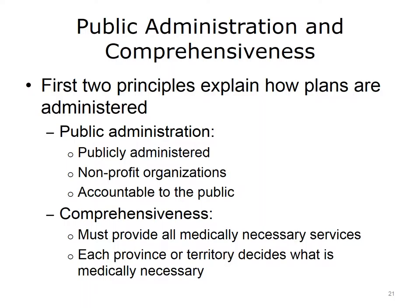The first two principles explain how a health plan must be administered by the province or territory. The public administration principle states that a public authority must administer the health plan in each province or territory. This authority must run the health plan as a non-profit organization, and its accounts can be publicly audited. This principle prevents provinces or territories from giving public funds to residents to pay for private, for-profit insurance. The comprehensiveness principle states that all medically necessary services must be covered by the health plan. Provinces and territories have the freedom to determine which services are medically necessary and which are not.